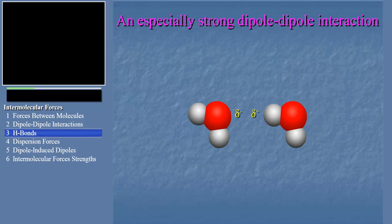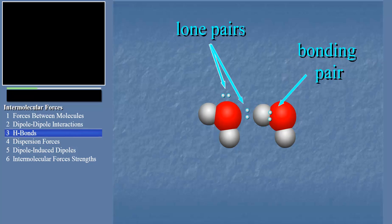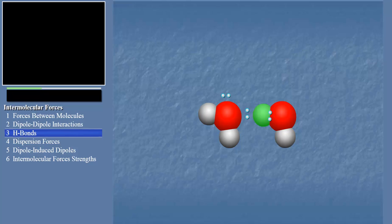But notice, too, that if we show the lone and bonding pairs on the molecules, an interesting thing happens. This hydrogen atom can get confused.